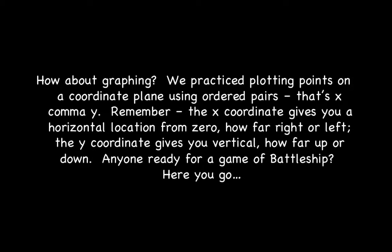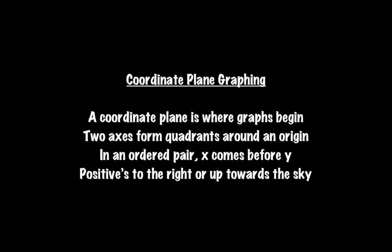How about graphing? We practice plotting points on the coordinate plane using ordered pairs — that's x comma y. The x coordinate gives you a horizontal location from zero: how far right or left. The y coordinate gives you a vertical: how far up or down. Anyone ready for a game of battleship? A coordinate plane is where graphs begin — two axes form quadrants around an origin. In an ordered pair, x comes before y; positives to the right or up towards the sky.